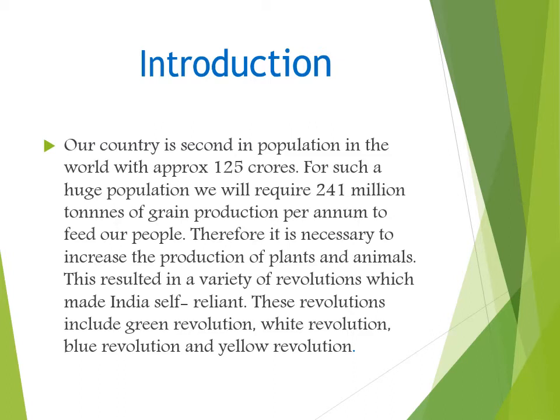Now let's talk about the White Revolution. It is another program by which we can increase milk production. This program made India sufficient in production of milk. The next is the Blue Revolution. Here, blue denotes water. The basic food that we get from water is fish. In this program, various methods have been taken to increase the production of fish.